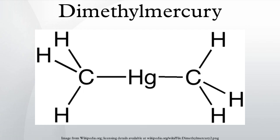Dimethylmercury is extremely toxic and dangerous to handle. Absorption of doses as low as 0.1 milliliters can result in severe mercury poisoning. The risks are enhanced because of the high vapor pressure of the liquid. Dimethylmercury passes through latex, PVC, butyl, and neoprene within seconds, and is very quickly absorbed through the skin. Due to its chemical nature, it carries a high aptitude for passing through the same safety equipment and barriers that prevent lab accidents, which have proved adequate protection for the majority of laboratory chemical substances.